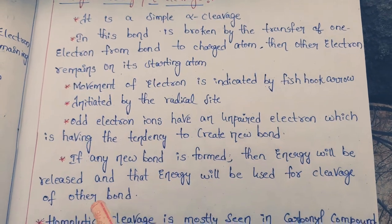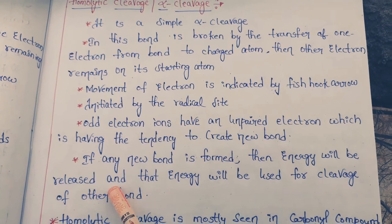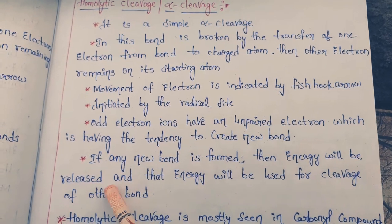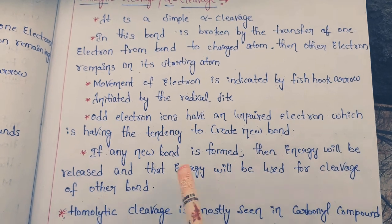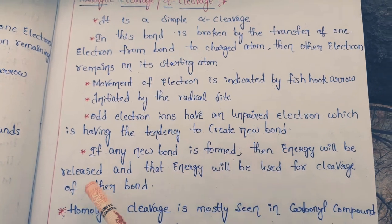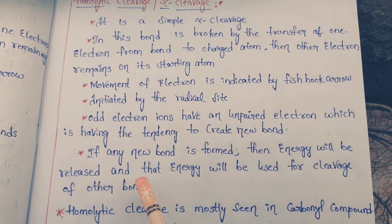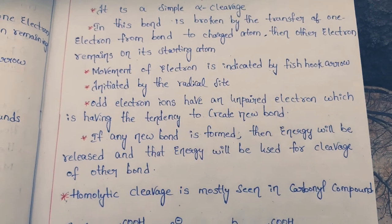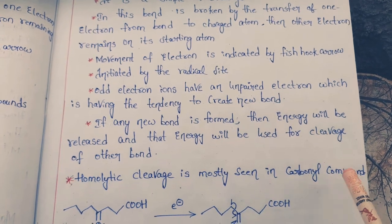If any new bond is formed, energy will be released, and that released energy is used for the cleavage of another bond. This process continues: whenever a new bond is formed, energy is released and used to cleave the next bond. Homolytic cleavage is mostly seen in carbonyl compounds.